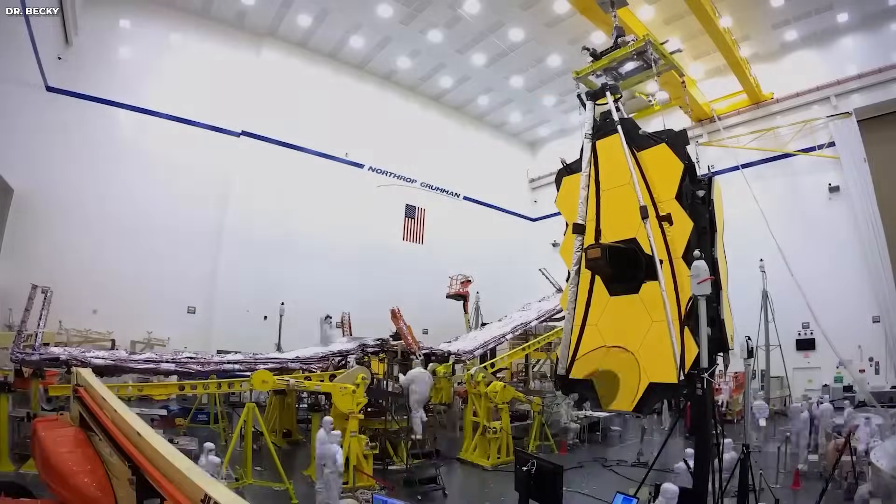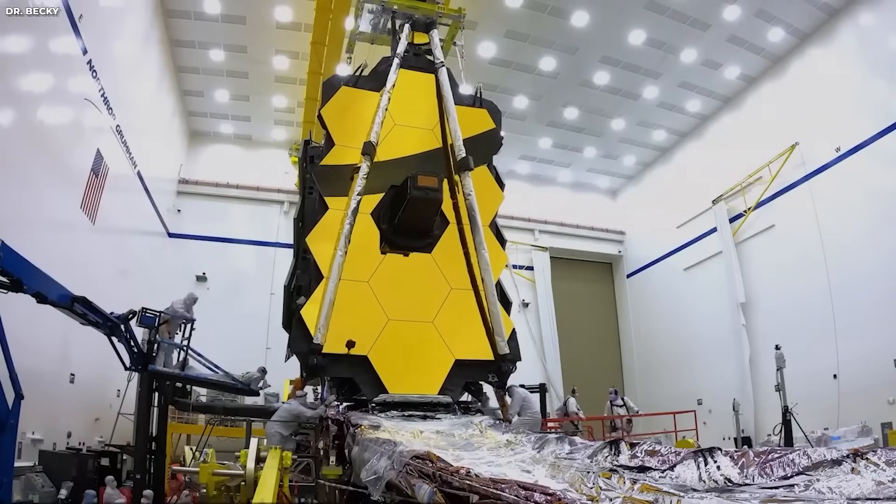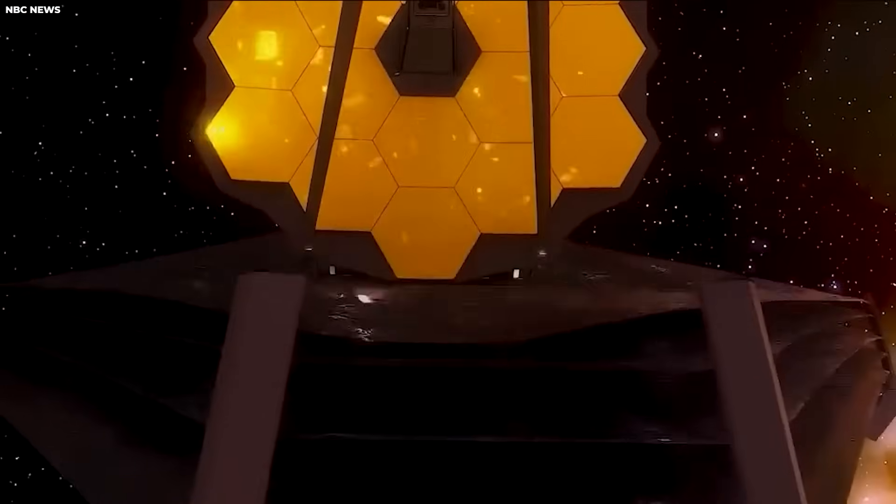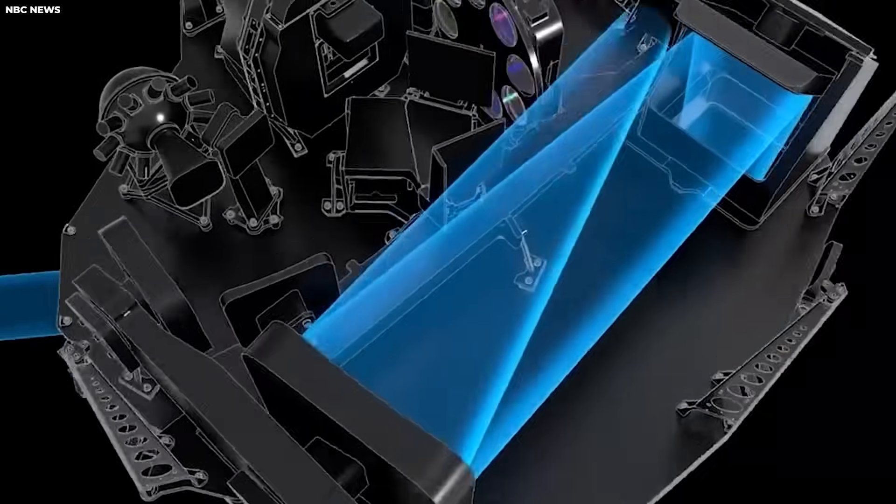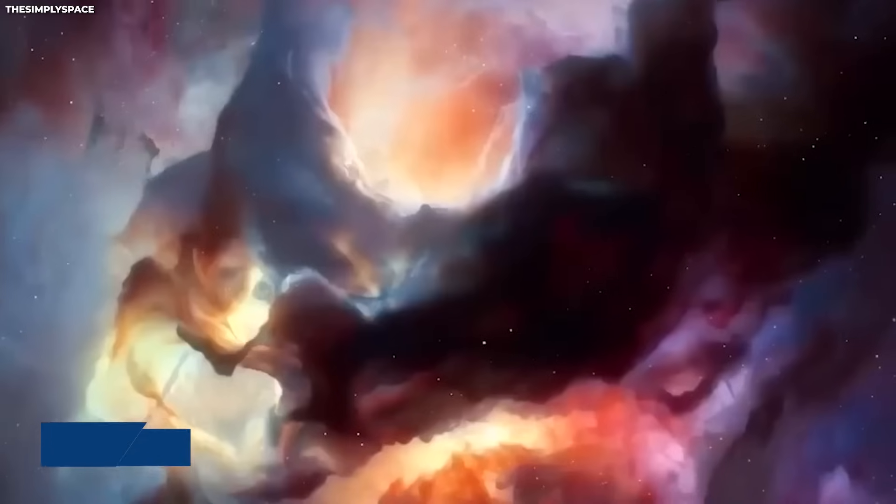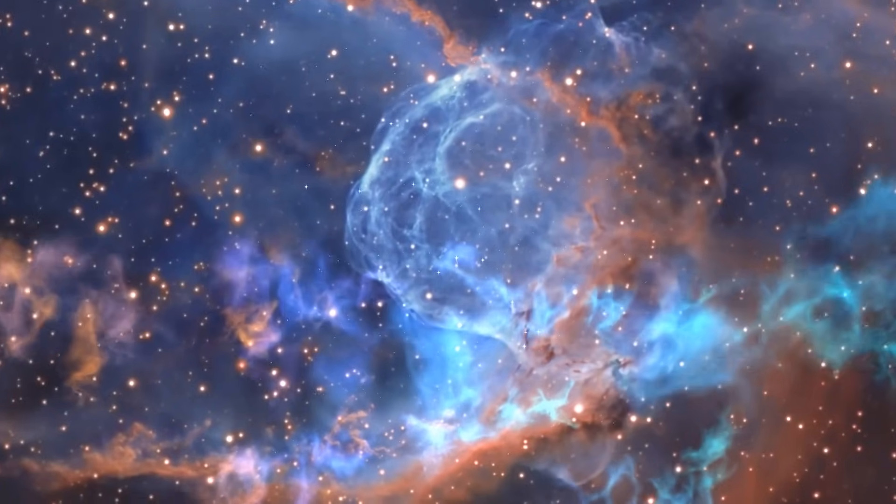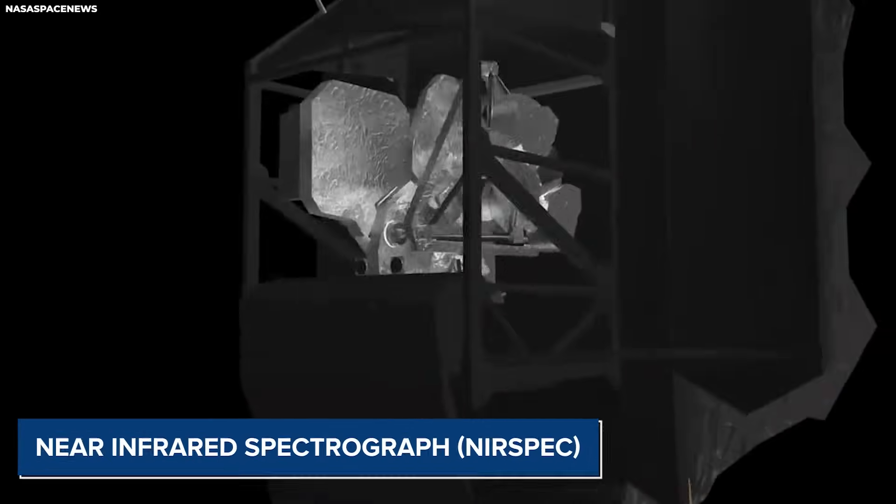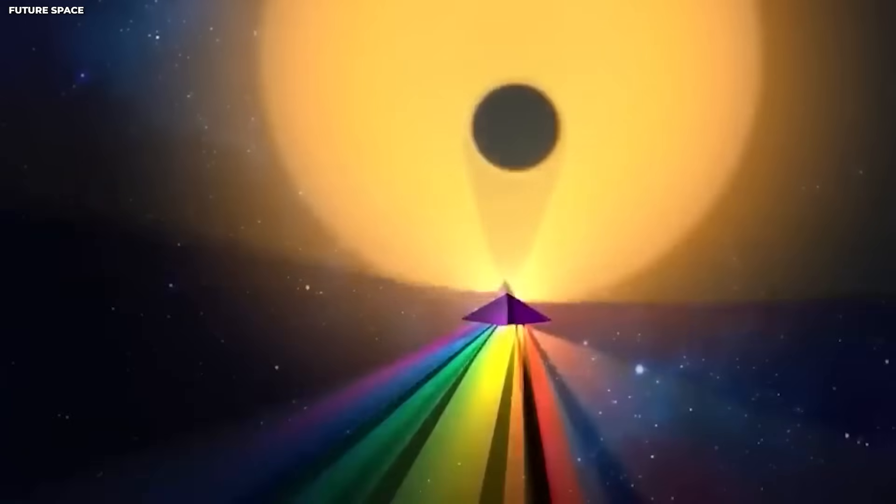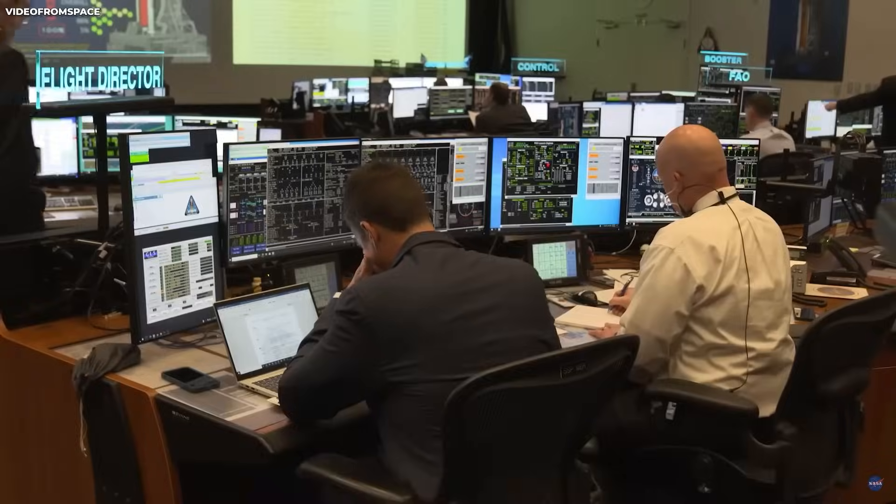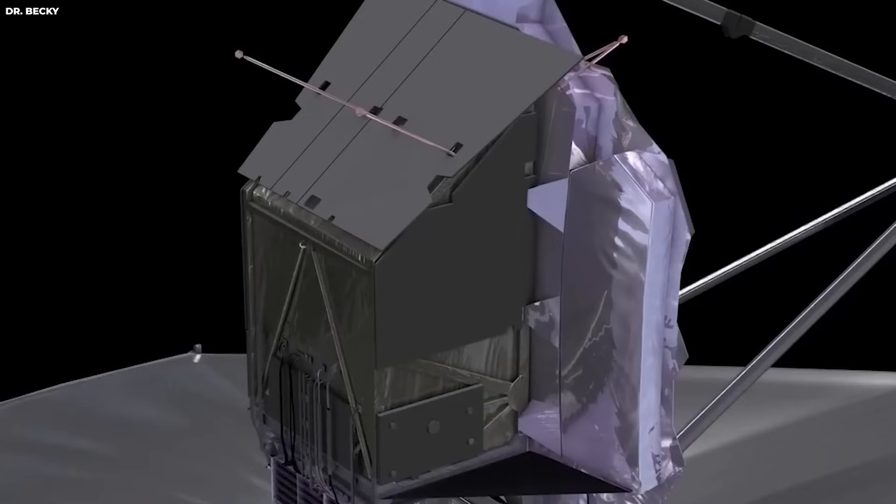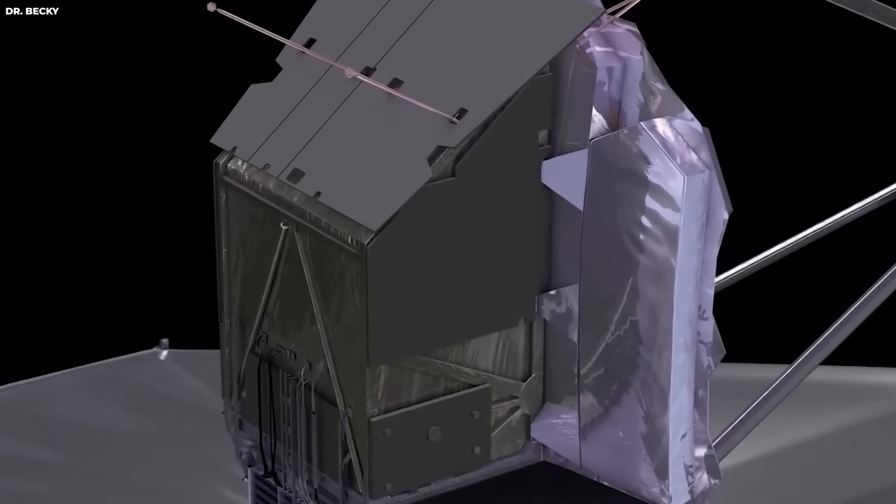Complementing this impressive mirror are four specialized instruments, each meticulously crafted to capture specific types of light and offer unique perspectives on the vast cosmos. One of the JWST's primary instruments is the near-infrared camera, NIRCAM, responsible for capturing stunning images of galaxies, nebulas, and other celestial wonders. Working in tandem with NIRCAM is the near-infrared spectrograph, which takes incoming light and dissects it into its component colors, allowing scientists to uncover intricate details about the objects under observation.